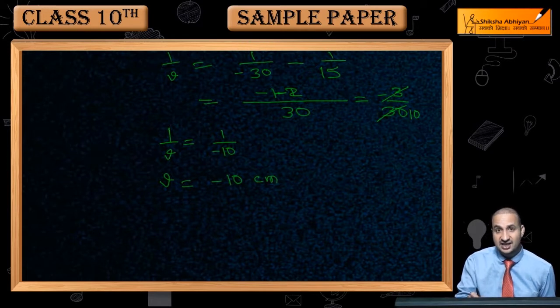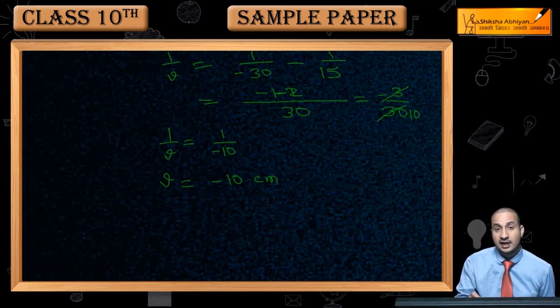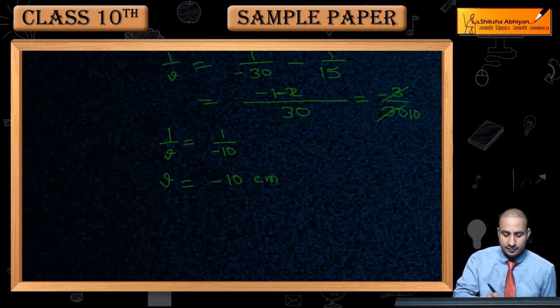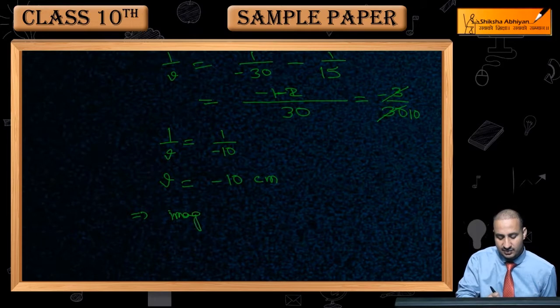Minus 10 cm is telling us that the image being formed is a virtual image. The concave lens forms it on the left side. So this implies that image is virtual.